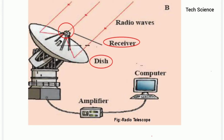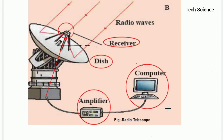All these waves pass through a wired structure and finally reach a device called an amplifier. Since the extraterrestrial heavenly objects emit radio waves with low amplitude, we have to amplify them — we have to give them a proper amplitude. For this reason we use the amplifier, and after proper amplification it moves towards the computer.